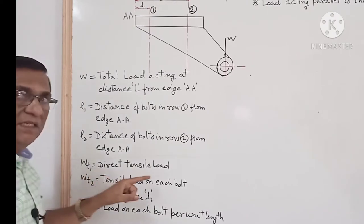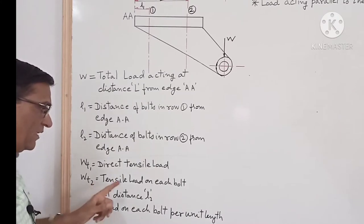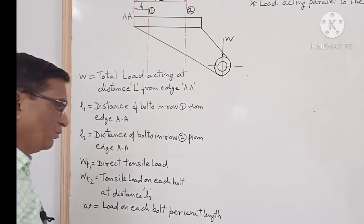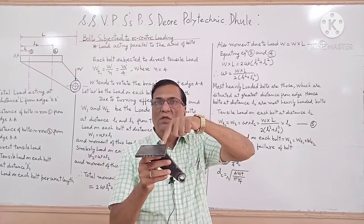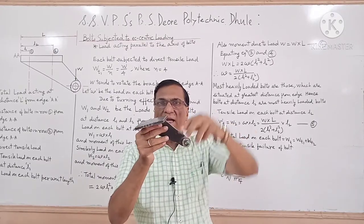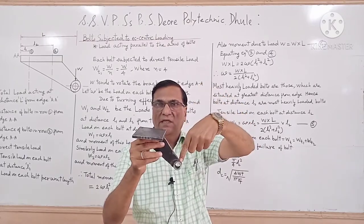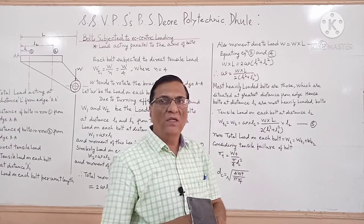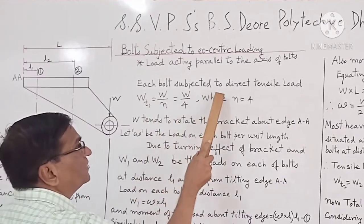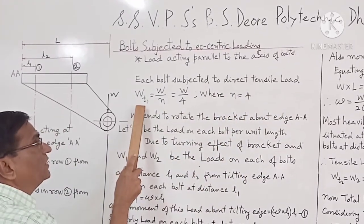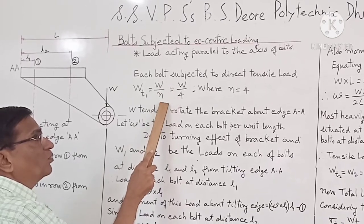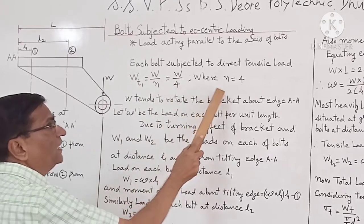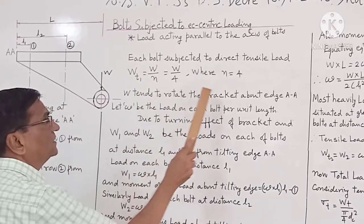Wt1 is the direct tensile load. Wt2 is the tensile load on each bolt at distance L2, and small w is the load on each bolt per unit length. Each bolt is subjected to tensile load and bending load due to eccentric loading. The direct tensile load on each bolt is Wt1 = W / n, where n is the number of bolts equal to 4. Hence Wt1 = W / 4.